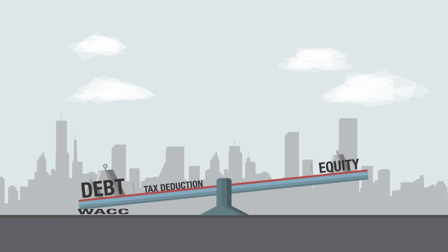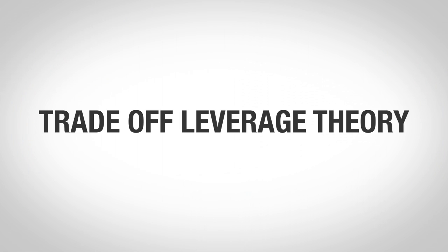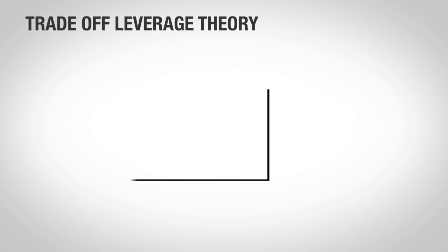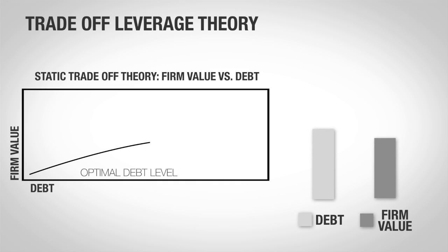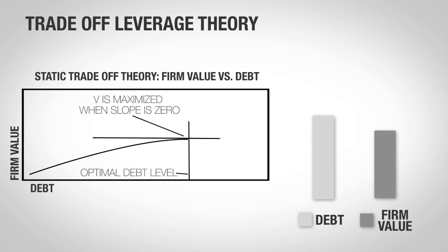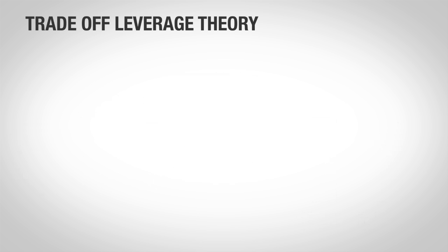Bankruptcy costs were then also included in both propositions, giving rise to Trade-off Leverage Theory. Simply put, this states that the closer a company gets to bankruptcy, the higher the bankruptcy costs. These costs eventually become greater than the tax savings on debt finance, and the value of the company begins to decrease. This means there is an optimal capital structure — a mix of debt and equity finance — which creates maximum value.